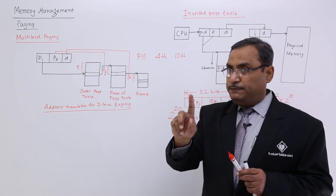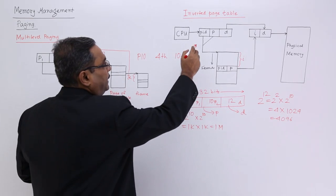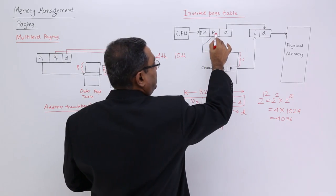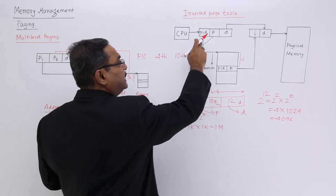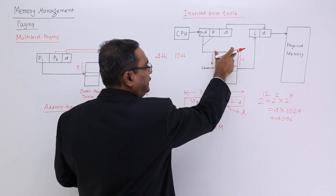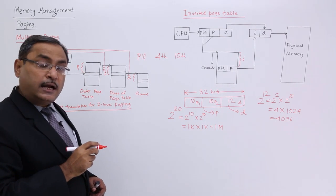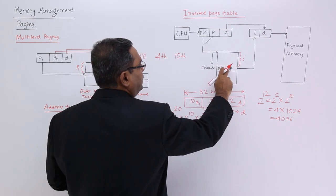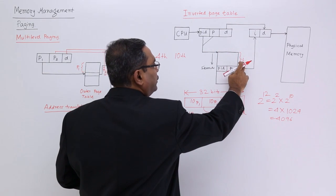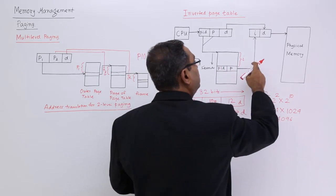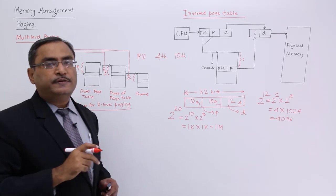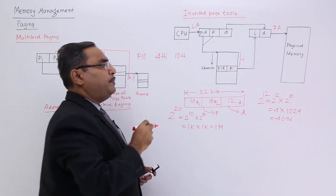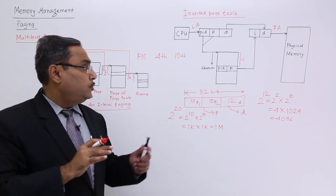So the address consists of three parts: the PID, the page number, and the displacement. I search the combination of PID and page number in the inverted page table — for example, P10 and 4. If I find this combination at the ith location, then i is the frame number. This frame number index combined with D gives the physical address. So the logical address is mapped onto the physical memory location in this way.